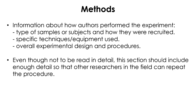In the methods section, you will find detailed information about how the authors performed their experiment or research, including the type of samples or subjects and how they were recruited. You will also find information about specific techniques, equipment, or apparatus used in the research, as well as the experimental design and overall procedures. Even though people don't always pay close attention to this section, it should include enough details so that other researchers in the field can repeat the procedure when needed.